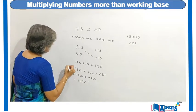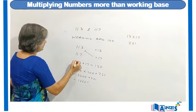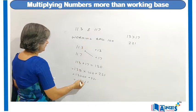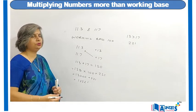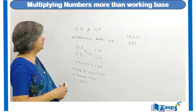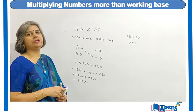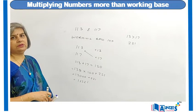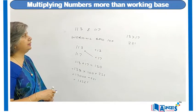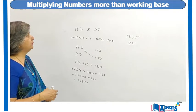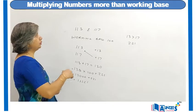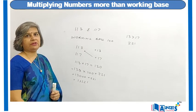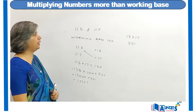So it will be 130 into 100 plus 221, which gives 13000 plus 221 = 13221. That is the multiplication: 113 multiplied by 117 equals 13221. This is how we apply the concept of multiplying two numbers more than the working base, since both 113 and 117 are more than 100.